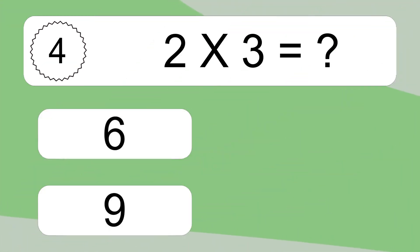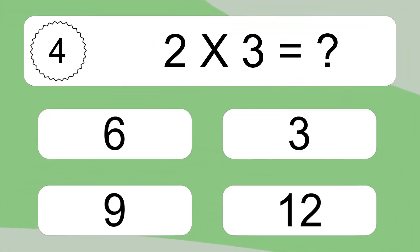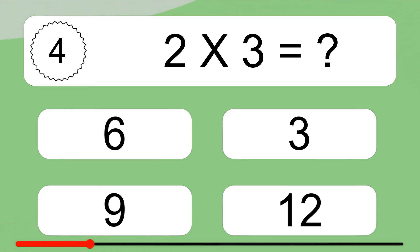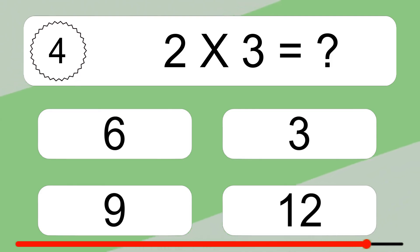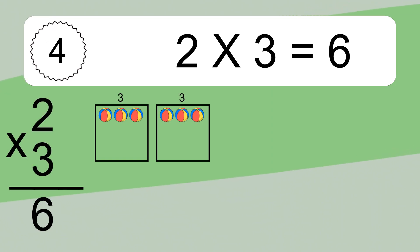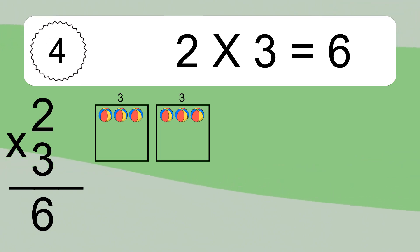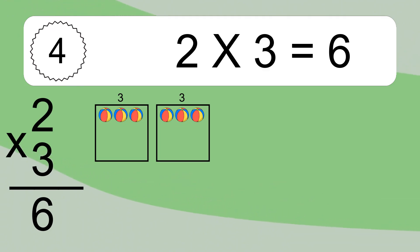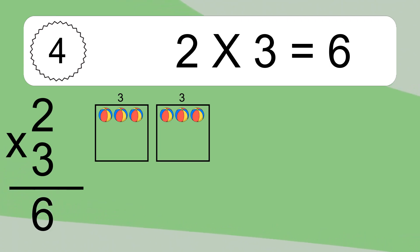2 times 3 equals what? 2 times 3 equals 6. We have 2 boxes, and each box has 3 colorful balls inside. If you count all the balls in all the boxes together, you will have 2 times 3 balls. This equals 6 balls.